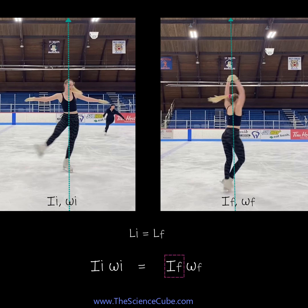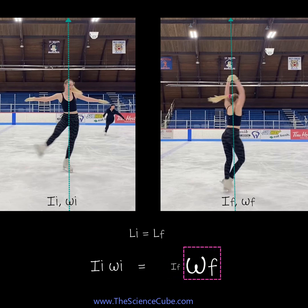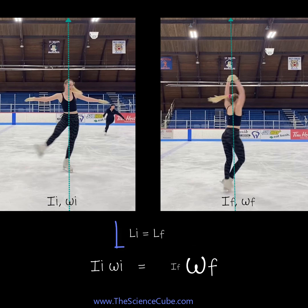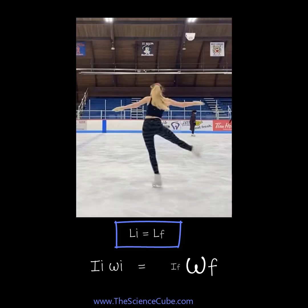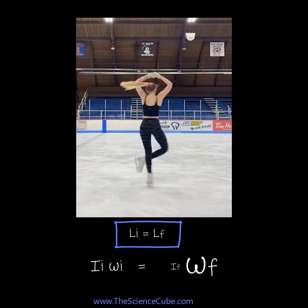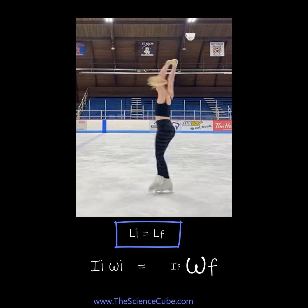What has happened here is that as the moment of inertia of the skater reduced when she pulled her hands in, her angular velocity increased so that this product remained the same as before. That is, the initial and the final angular momentum remained the same in accordance with the law of conservation of angular momentum. And this precise control over rotational motion is what allows ice skaters to perform at the highest level, executing breathtaking spins with incredible speeds and precision.